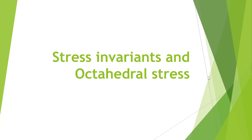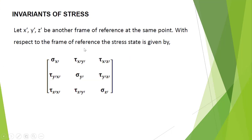Hi guys, today we will be discussing stress invariance and octahedral stress. Invariance of stress: at a particular point we have the state of stress given as a three by three matrix sigma x-dash, tau x-dash y-dash, and so on. Once we have this particular state of stress at a particular point given any frame of reference, let it be x-dash, y-dash, z-dash.